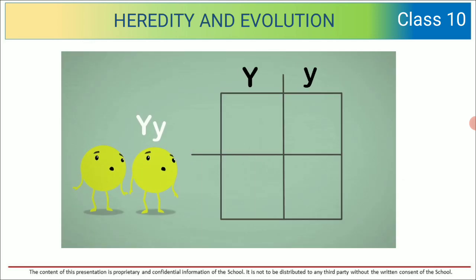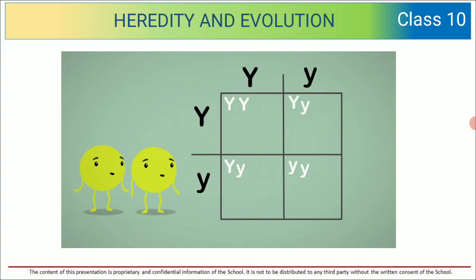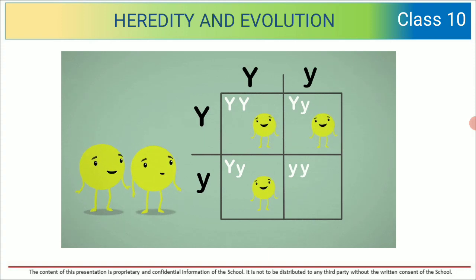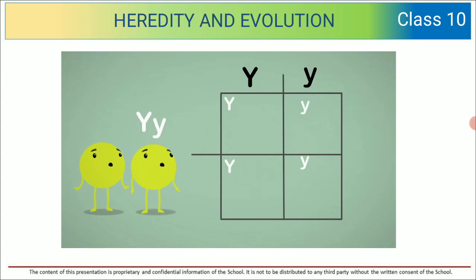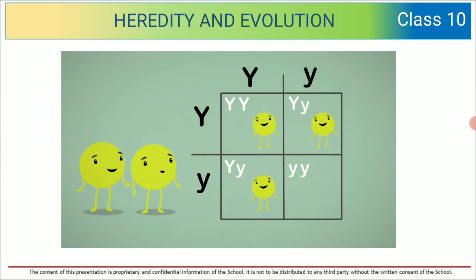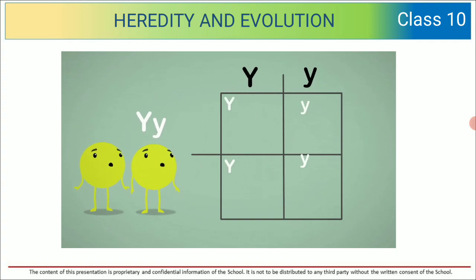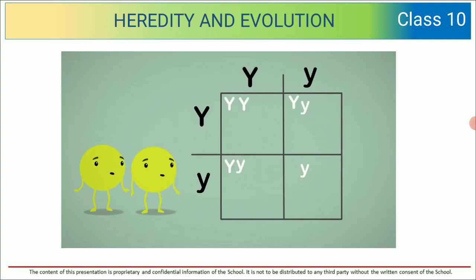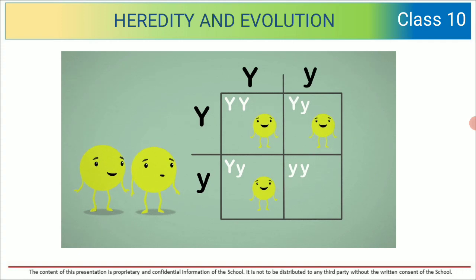Looking at the notation: capital Y capital Y crossed with small y small y. When he crossed these, he found the offspring to be capital Y capital Y, capital Y small y, capital Y small y, and small y small y. The last combination is homozygous recessive. The ratio works out to 3 tall to 1 short — a 3:1 ratio.